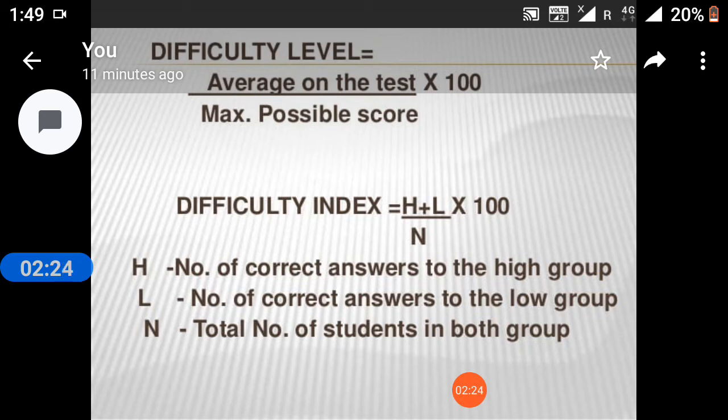Difficulty index equals H plus L upon N into 100. H equals number of correct answers in the high group. L equals number of correct answers in the low group. And N equals number of students in both groups.